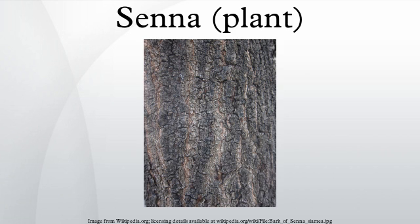Senna, the sennas, is a large genus of flowering plants in the legume family Fabaceae, and the sub-family Caesalpinioideae. This diverse genus is native throughout the tropics, with a small number of species in temperate regions. The number of species is estimated to be from about 260 to 350. The type species for the genus is Senna alexandrina.